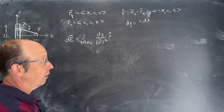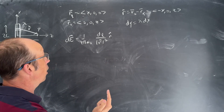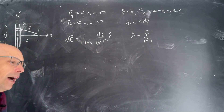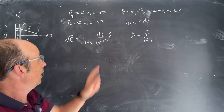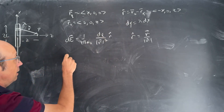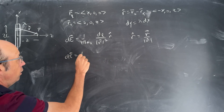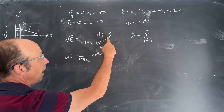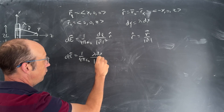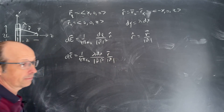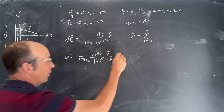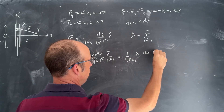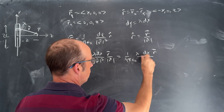Now I have to deal with r hat and the magnitude of r. Remember r hat is defined as the vector r divided by the magnitude of r. Plugging both in: dE equals 1 over 4 pi epsilon naught, lambda dx, times r over the magnitude of r cubed. Let's find the magnitude of r — that's the square root of x squared plus z squared. So I write x squared plus z squared to the 3 halves in the denominator.